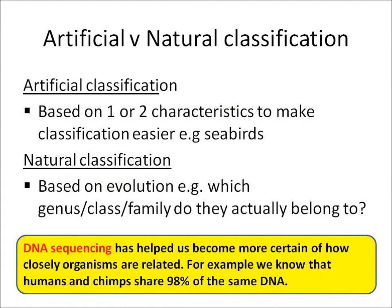You also need to know the difference between artificial classification and natural classification. Artificial classification is where we base it on just one or two different characteristics, so that we can say that both puffins and herring gulls are both seabirds. Natural classification is based on evolution — which genus, class, family, etc. do they actually belong to? So puffins and herring gulls are actually in different evolutionary families.